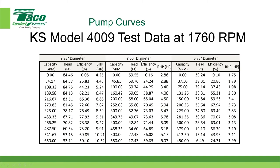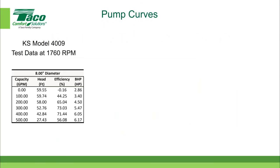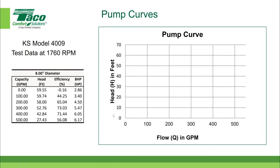Let's look at just the 8-inch diameter impeller data. We take the flow on the horizontal axis in gallons per minute and the differential pressure in feet — in the pump world we call differential pressure across the pump the 'head' of the pump. Flow is in gallons per minute and differential pressure is in feet of water column. We take the data collected in the laboratory and plot it. The first data point is zero GPM and roughly 60 feet of head.